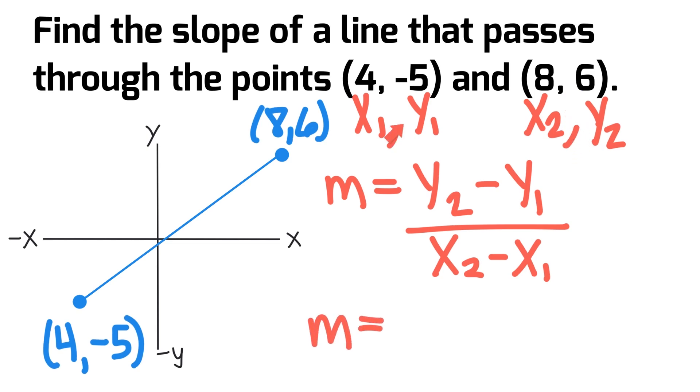y2 is 6, y1 is -5, so let's substitute those in: 6 minus (-5) all divided by... x2 is 8 and x1 is 4.